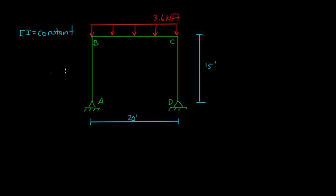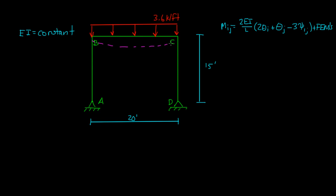Our general equation is: M_ij equals 2EI over L times (2·theta_i + theta_j − 3·psi_ij) plus any fixed end moments the member may have. There are no chord rotations for any of these members, so we can safely assume psi_AB equals psi_BC equals psi_CD, they're all equal to zero.